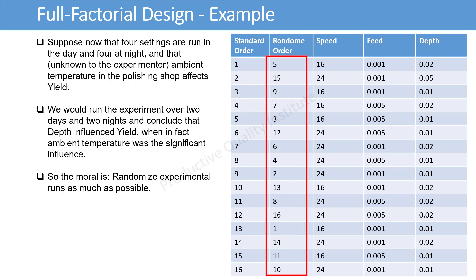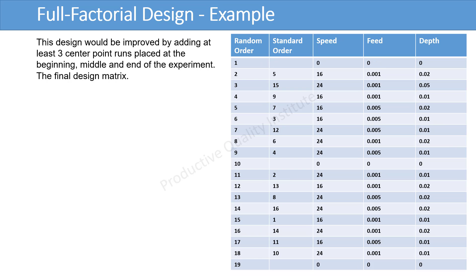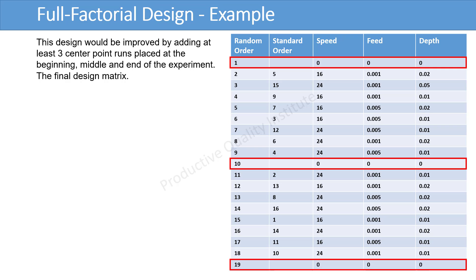Instead of work in standard order, we will work with random order. This design would be improved by adding at least 3 center point runs placed at the beginning, at the middle, and at the end of the experiment. The final design matrix.